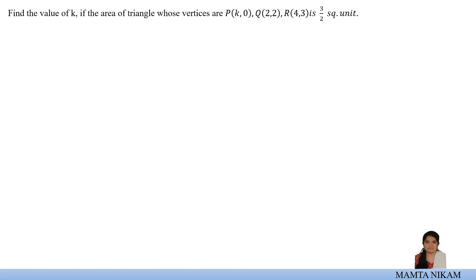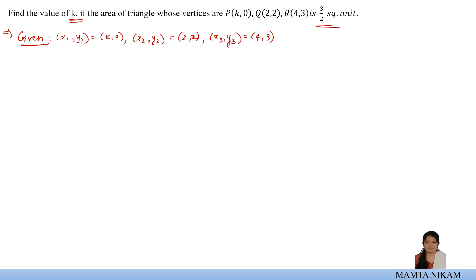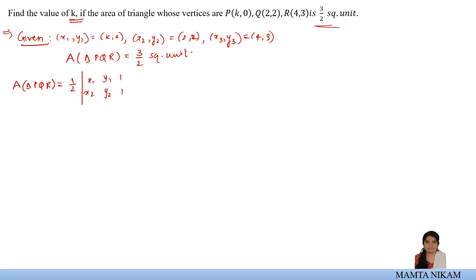Let us discuss one more example. Find the value of k if the area of a triangle with vertices A(k, 0), B(2, 2), and C(4, 3) is given as 3/2. Given: X1, Y1 = k, 0; X2, Y2 = 2, 2; X3, Y3 = 4, 3; and area = 3/2. As per the formula, area = half times determinant of (k, 0, 1), (2, 2, 1), (4, 3, 1) = 3/2.